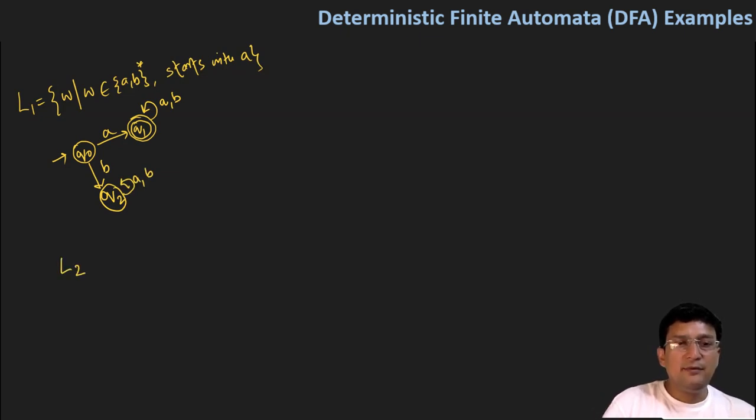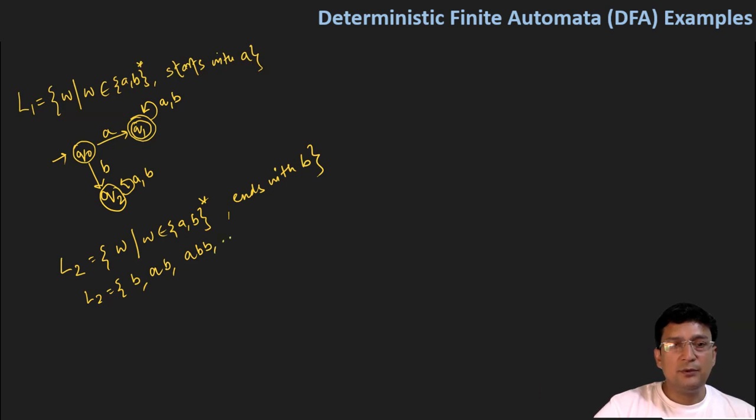Now let's say we have L2 string, which is once again, the alphabet set is AB, which ends with B. So if my string ends with B, then the language will contain small b, that will be the smallest string. And then I can have AB, I can have ABB, and so on.